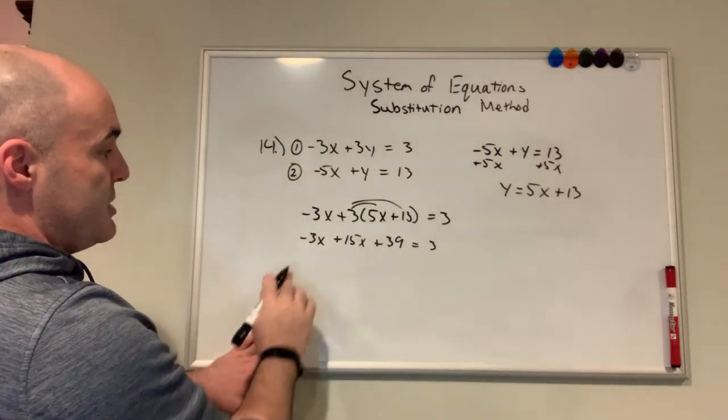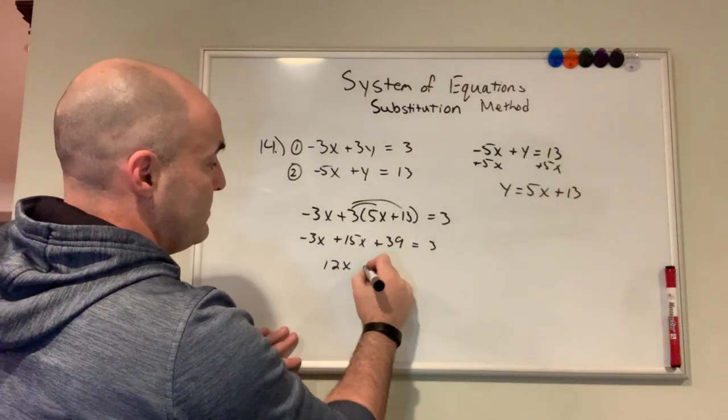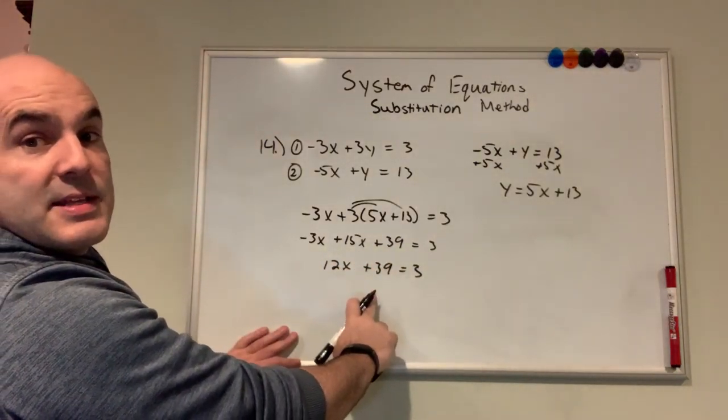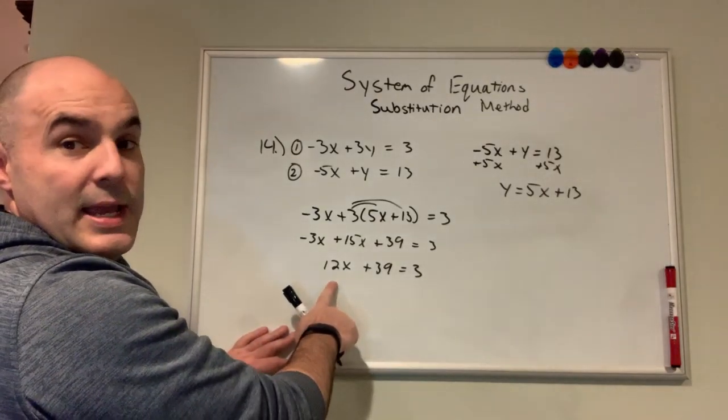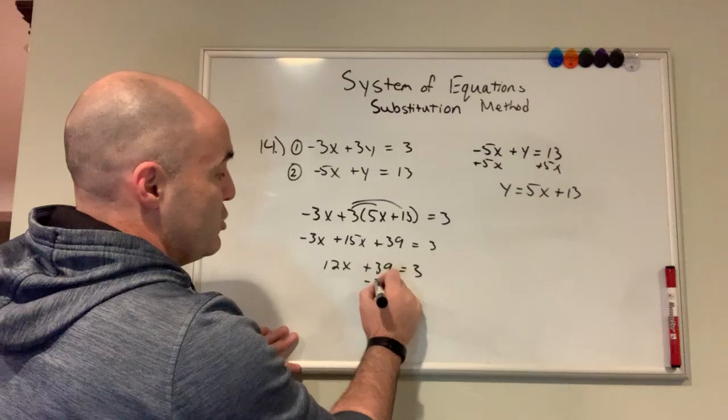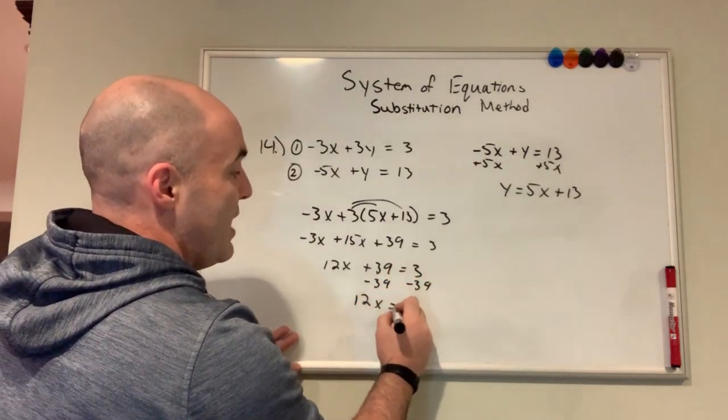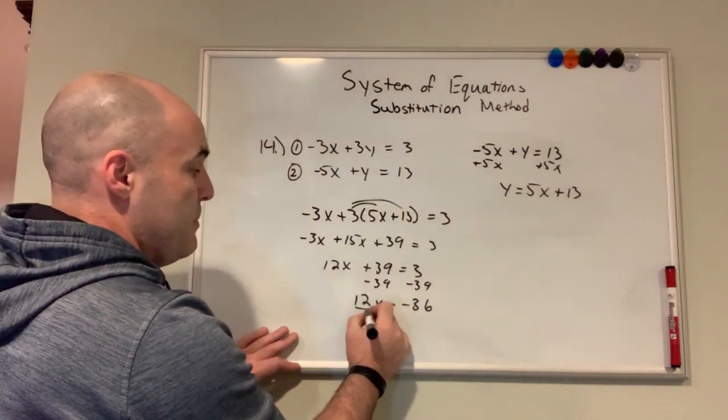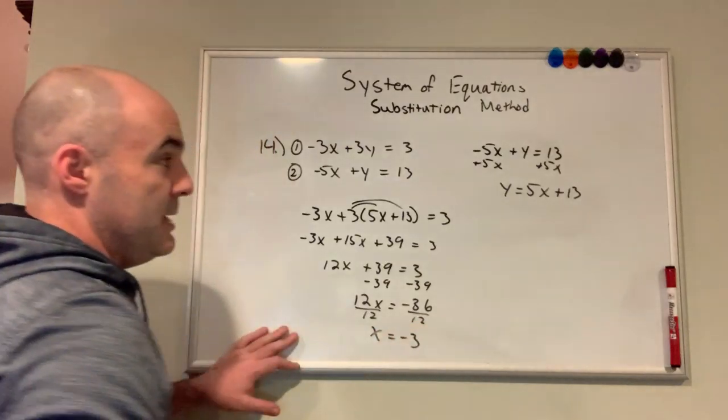We'll combine our like terms. Negative 3x and 15x gives me 12x. Now I'm simplified on both sides. So now we'll solve and get x by itself. I'll subtract 39 from both sides. That gives me 12x equals negative 36. Divide both sides by 12, and x is negative 3.